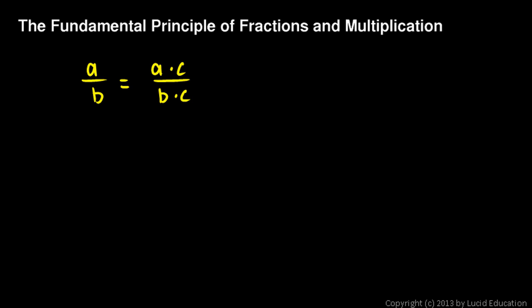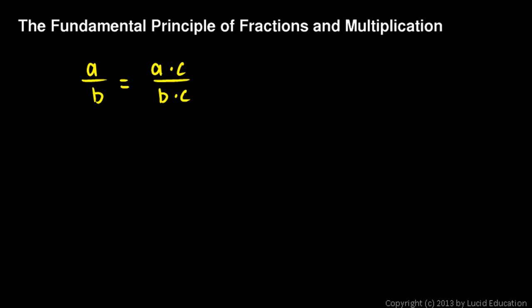So let's do a couple of examples of this now. The first one, rewrite 3 sevenths with the denominator of 28. Okay, here's how we do this. We're going to write 3 sevenths equals, and we're going to have some other fraction over here that has a denominator of 28. So go ahead and write the denominator of 28. The question is, what do we write up here?